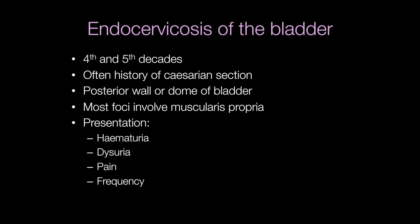One site that endocervicosis frequently occurs in is the bladder. It occurs in the fourth and fifth decades and affects the posterior wall or dome of the bladder, usually involving the deep muscle. Presenting symptoms include hematuria, dysuria, pain, and frequency.